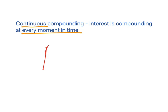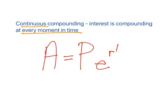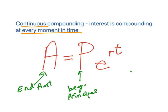What is the formula? A equals P times E raised to the RT power. Now, A is the ending amount. P is our beginning principal, what we start with. R is our percentage rate, which we're used to seeing. And T is our time in years.